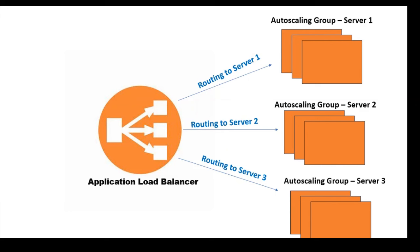A load balancer is a service in AWS — as well as other public clouds — that automatically distributes incoming application traffic across multiple targets or servers, ensuring no single instance bears too much load. Think of a load balancer as a traffic cop for your web application. When users try to access your website, Elastic Load Balancer evenly distributes incoming requests among a fleet of EC2 instances, ensuring better performance and enhancing fault tolerance.